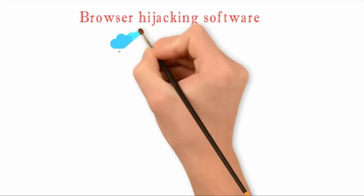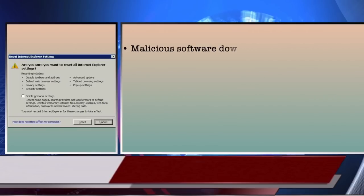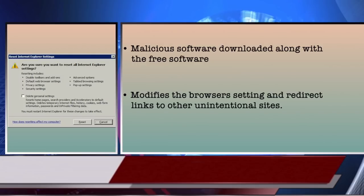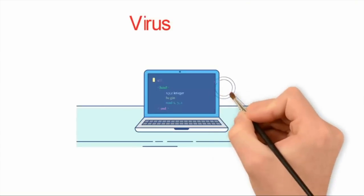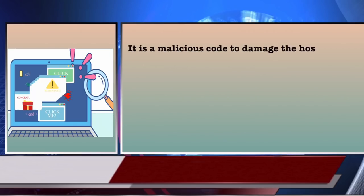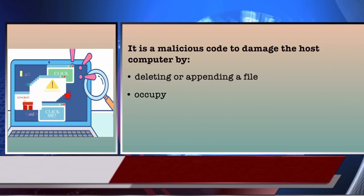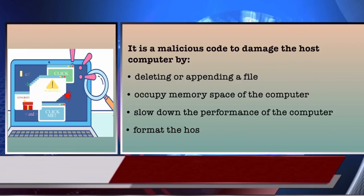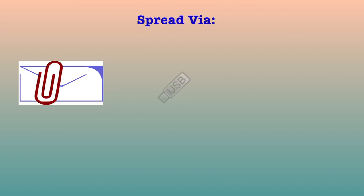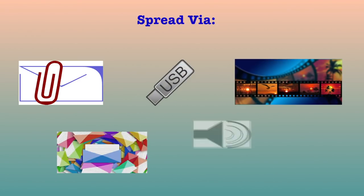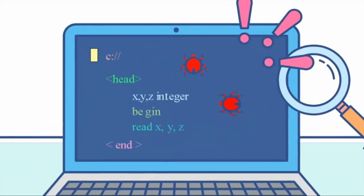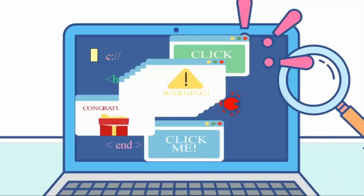The third variety of malware is browser hijacking software — malicious software downloaded along with free software from the internet and installed without the user's knowledge, which modifies browser settings and redirects links to unintentional sites. The next category is a virus — a malicious code written to damage the host computer by deleting or appending files, occupying memory by replicating itself, slowing performance, or formatting the host machine. It can spread via email attachments, pen drives, digital images, e-greetings, or audio/video clips. A virus cannot activate itself without human intervention — the executable file must be run first.